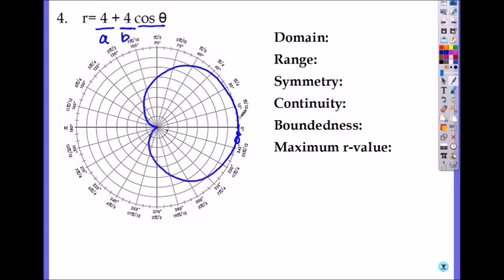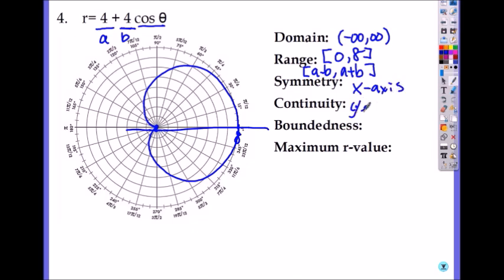So what's its domain? Domain is all real numbers. And range will be what? For the limaçons, we always do A minus B to A plus B. So what is A minus B? The smallest radius is 4, because when you add it, it will never be negative. So it is 0 to, 4 plus 4 is 8. This is your A and B. Symmetry, it's symmetric on the x-axis. And yes, it is continuous. And yes, it is bounded. And the maximum value of r will be 8.